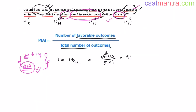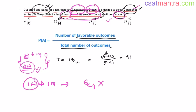First case: one woman and one man. Out of six women, how many ways can you select one woman? 6C1. And out of eight men, how many ways can you select one man? 8C1. This is 6 × 8 = 48.